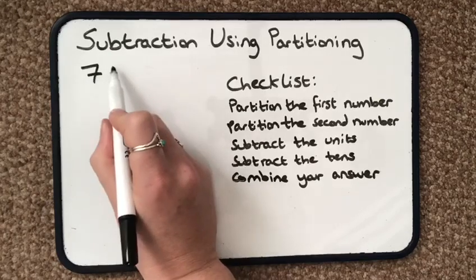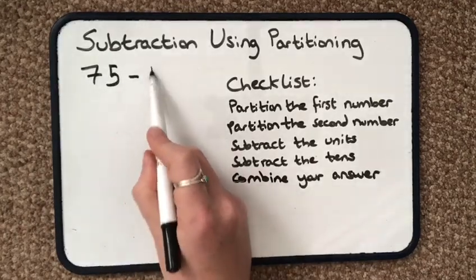We're going to use some small numbers today, so I'm going to do 75 take away 43.